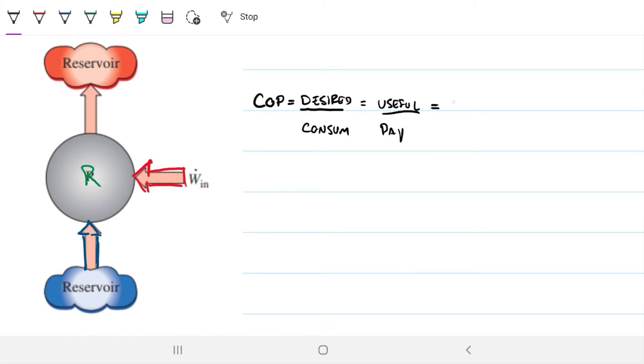So for a refrigerator, the coefficient of performance is QL or QLow, which is this guy here, divided by the work. And then this is QHigh or QHot.